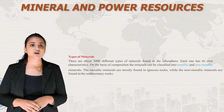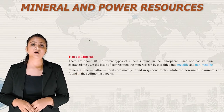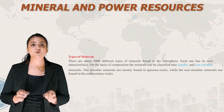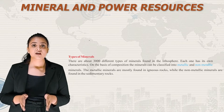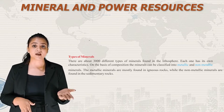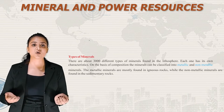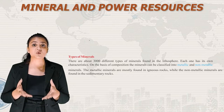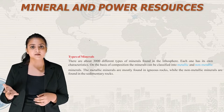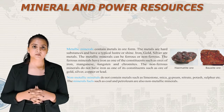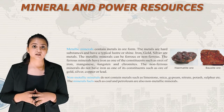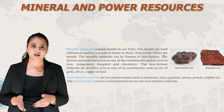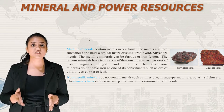Now let us talk about types of minerals. There are about 3000 different types of minerals found in the lithosphere, each with its own characteristics. On the basis of composition, minerals can be classified into metallic and non-metallic minerals. Metallic minerals are mostly found in igneous rock, while non-metallic minerals are found in sedimentary rock. Metallic minerals contain metals in ore form. Metals are hard substances and have a typical lustre or shine — iron, gold, and silver are metals.